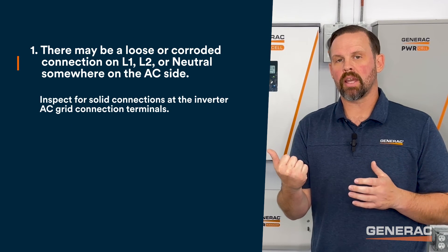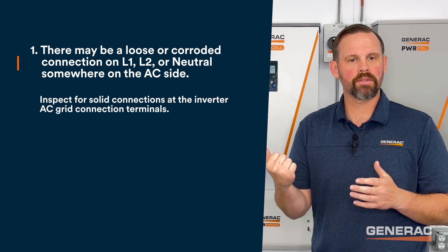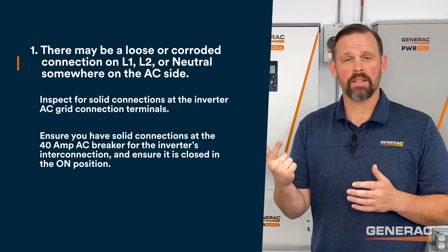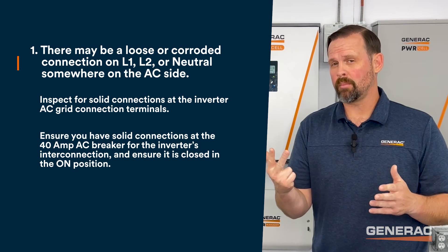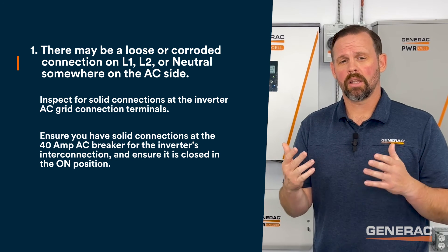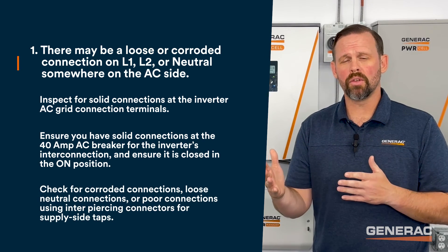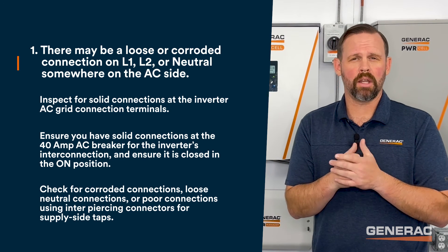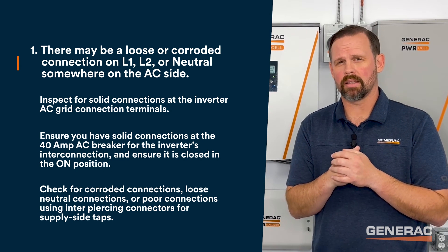Inspect for solid connections at the inverter AC grid connection terminals, ensure you have a solid connection at the 40-amp AC breaker for the inverter's interconnection, and ensure that breaker is in the on position. Likewise, check for corroded connections, loose neutral connections, or a poor connection with an inner piercing connector for a supply side tap.